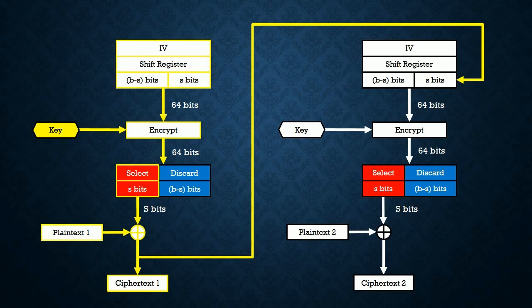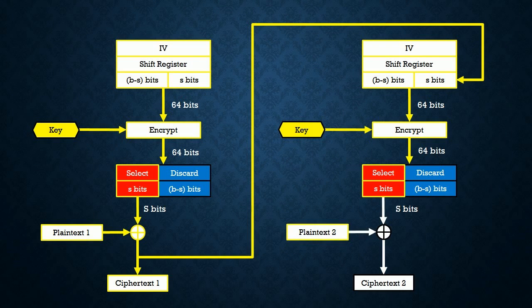The ciphertext will also be fed back to the shift register. This causes the leftmost S bits in the shift register to be shifted out. Then, the steps are repeated. These processes will be repeated until all the plaintext have been encrypted.